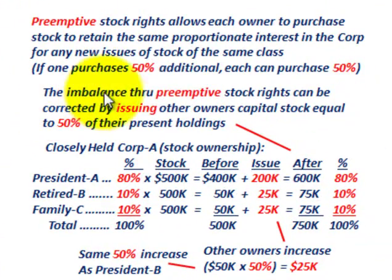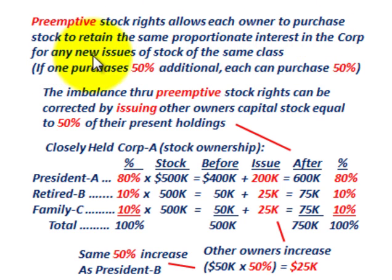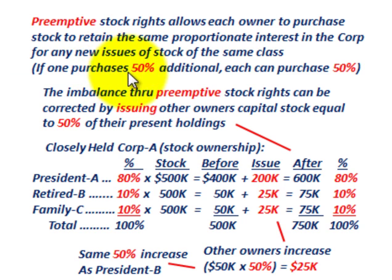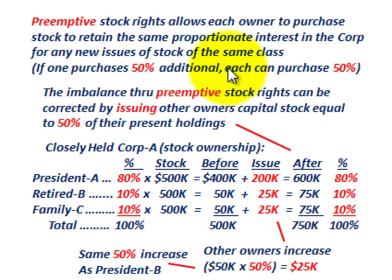Preemptive stock rights allow each owner to purchase stock to retain the same proportionate interest in the corporation for any new issues of stock in the same class — we're only talking about one class in our example. So if one stockholder purchases a 50% additional amount, as in our example, each of the other stockholders should also be able to purchase 50% additional capital of the company that's being issued.